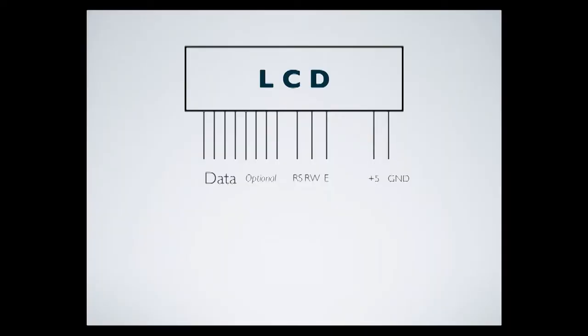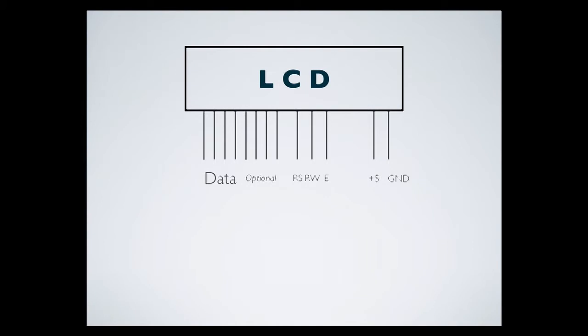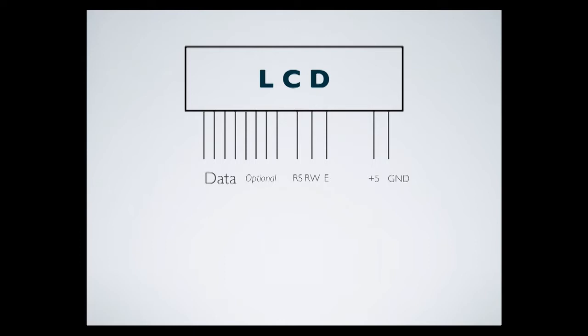Looking at this drawing from last week, we had four data pins, an RS pin, an RW pin, an E pin, plus 5-volt and ground pins. The actual Arduino pins used was seven — four data, RS, RW, and E. Optionally you can use eight data pins for extended character sets, which would total 11 pins. The Arduino Uno only has 13 digital pins, and two are reserved for read and write, so you really only have 11 available. Using this LCD on an Arduino Uno uses up all your digital inputs or outputs.